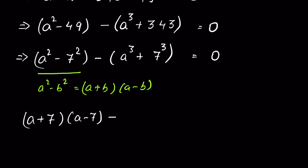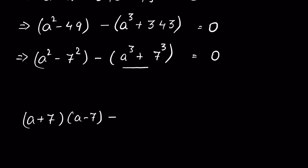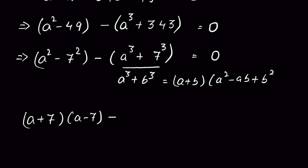The expression a cubed plus 7 cubed is a sum of cubes, in the form a³ + b³, which expands as (a + b)(a² − ab + b²). With b = 7, this becomes (a + 7)(a² − 7a + 49).